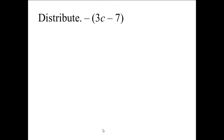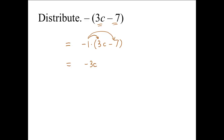We will use the distributive property mainly because inside the parentheses, 3c and 7 cannot be subtracted because they are not like terms. Notice that the negative sign in front of the parentheses is equivalent to writing negative 1 times the quantity 3c minus 7. We distribute the negative 1 times 3c — negative times positive — so negative 1 times positive 3c is negative 3c. Then negative 1 times negative 7: negative times negative is positive, so that gives positive 7. Negative 3c plus 7 is our answer.